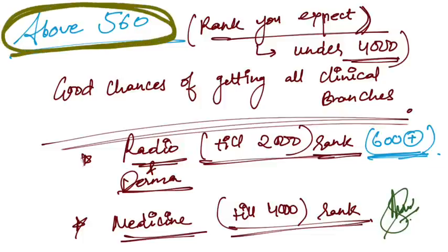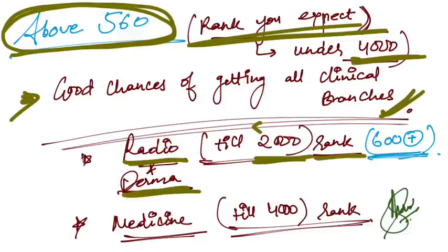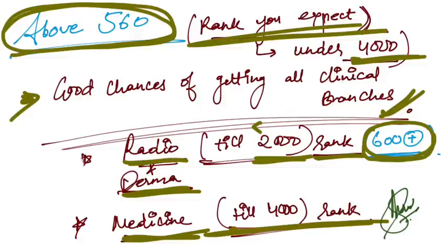Above 560, the rank you can expect is under 4000. Good chances of getting all the clinical branches. I have seen radiology and dermatology seats you can get till 2000 rank or around 2000 rank, and 600 plus score you need for this. At 4000 rank, till 4000 rank, medicine in government colleges. If you are scoring around 560 to 570 or 580, you will get medicine in government medical colleges.